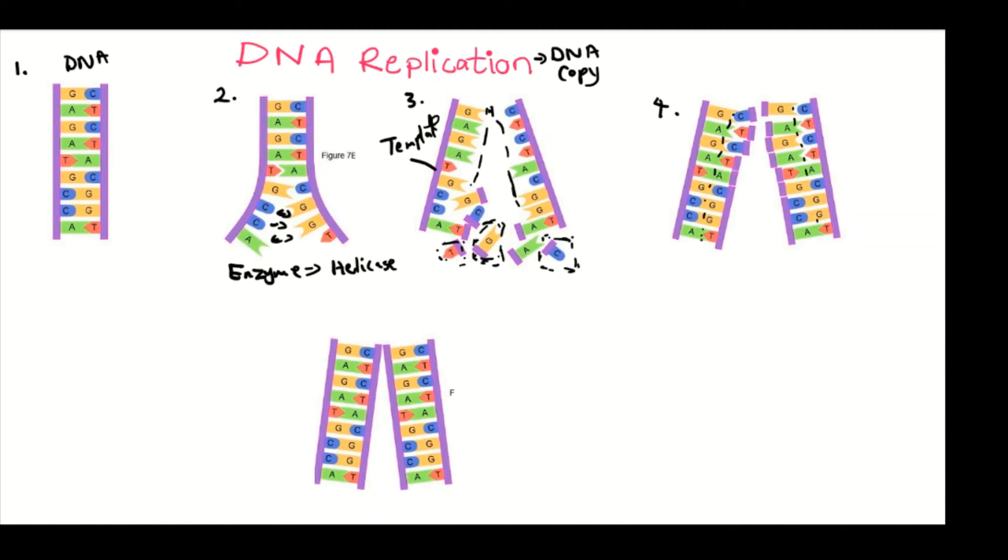So each nitrogenous base bonds with a DNA template. So that's what happens here. Now once these bonds are created, then in number five we will have two identical DNA molecules that are formed.